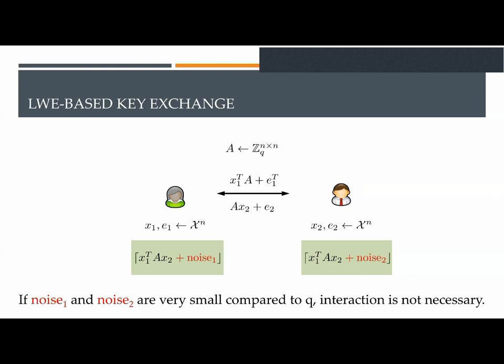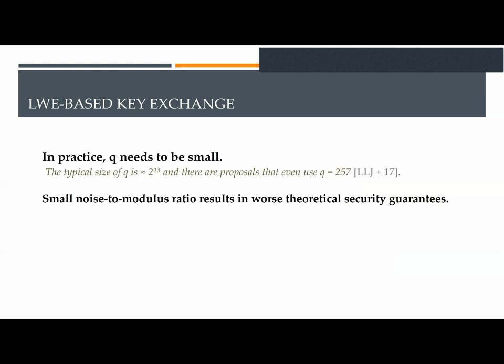In other words, if the noise-to-modulus ratio is small, then the parties can agree with high probability. However, this solution is not satisfying for a couple of reasons. First, in practical scenarios, q has to be very small. In fact, in certain cases, it can be as small as 257.